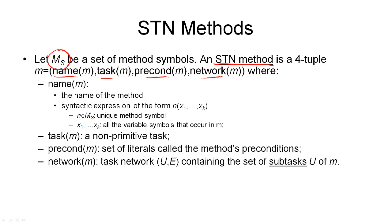The first component is the name of the method, which is a way to refer to this method. We use a syntactic expression very similar to what we've seen for tasks and operators. It's a symbol n, which must be one of our unique method symbols, followed by a set of parameters x1 through xk, which are variable symbols that occur in m.